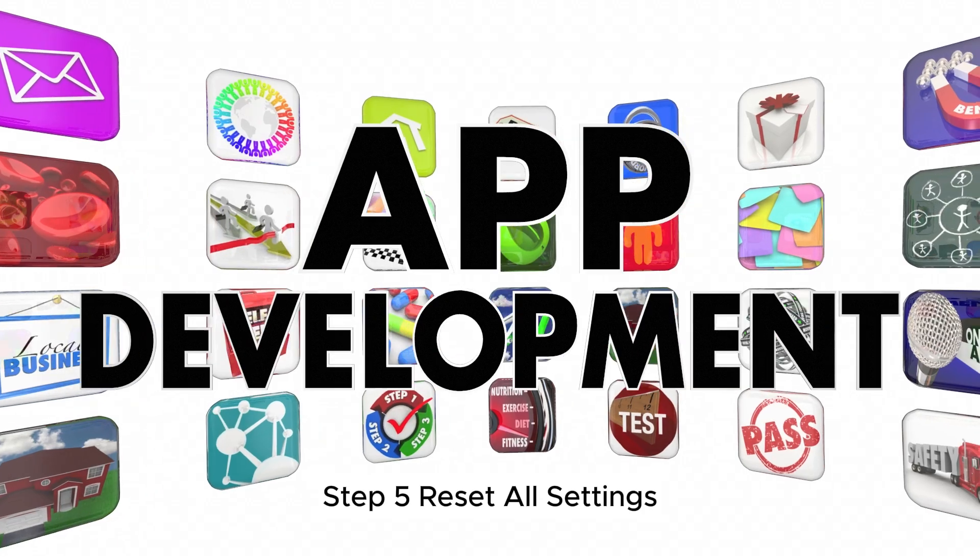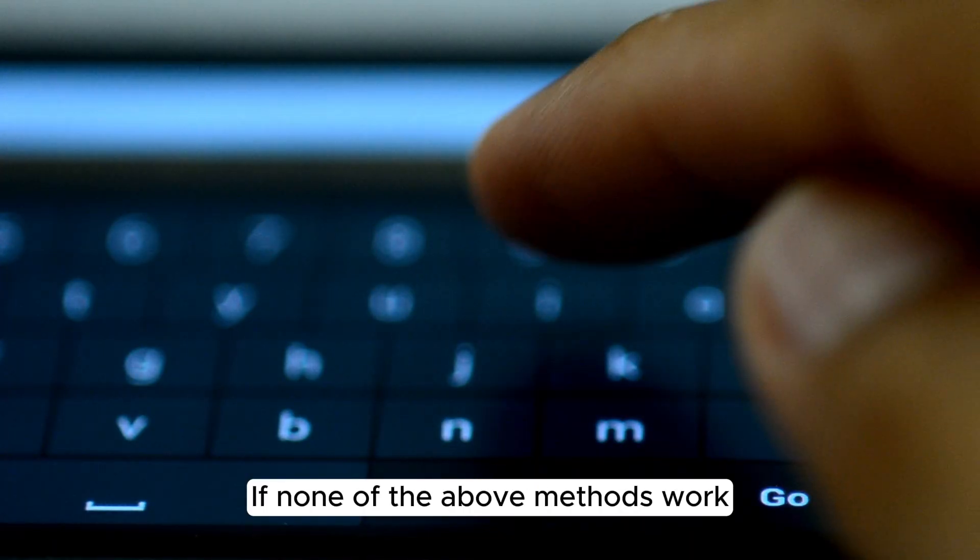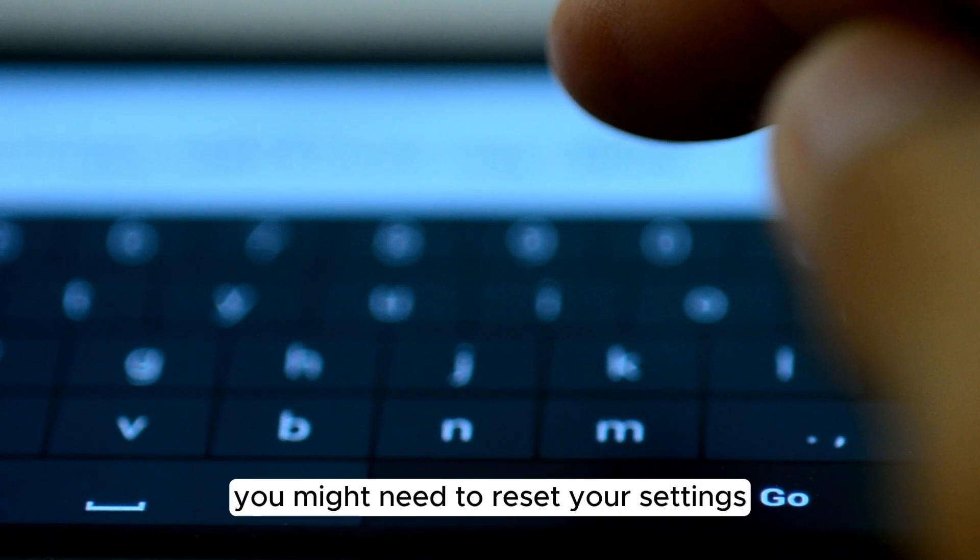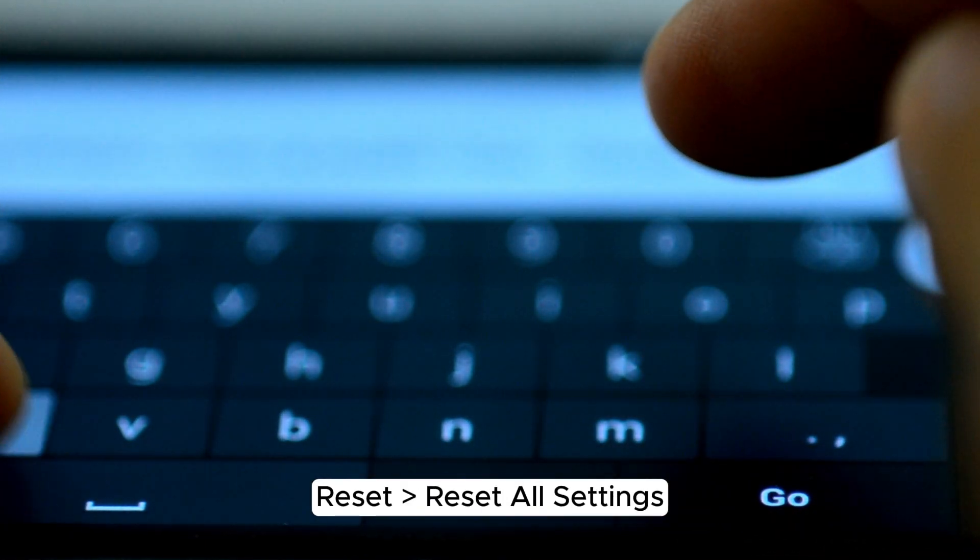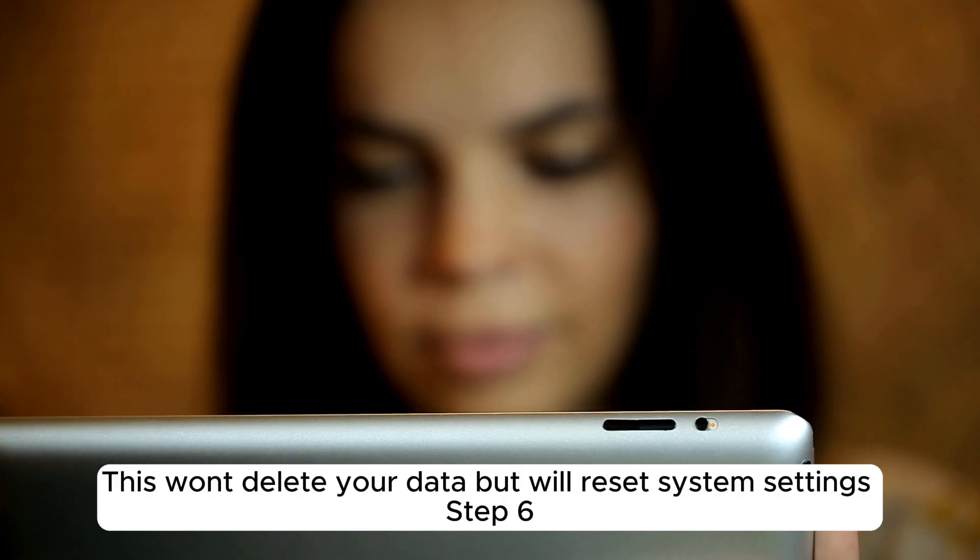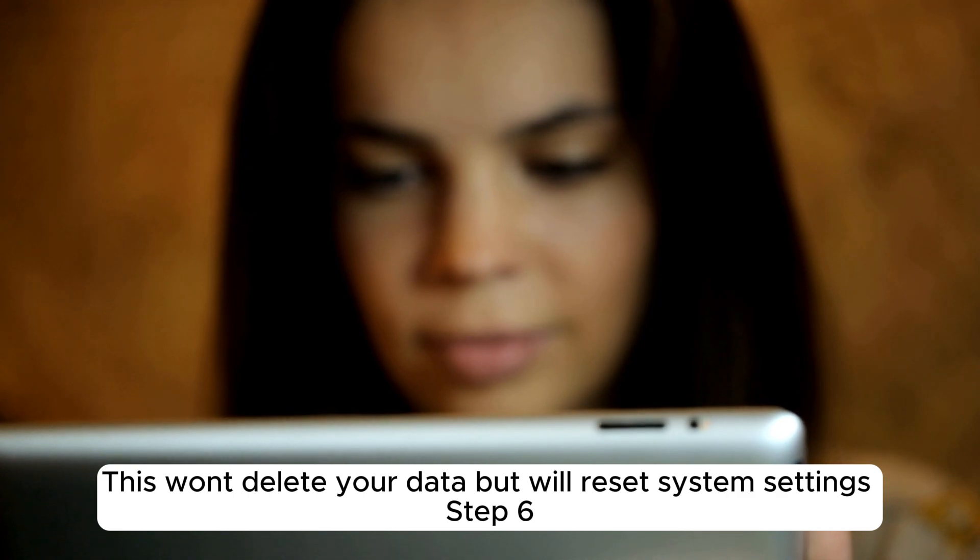Step 5: Reset all settings. If none of the above methods work, you might need to reset your settings. Go to Settings, General, Reset, Reset All Settings. This won't delete your data but will reset system settings.